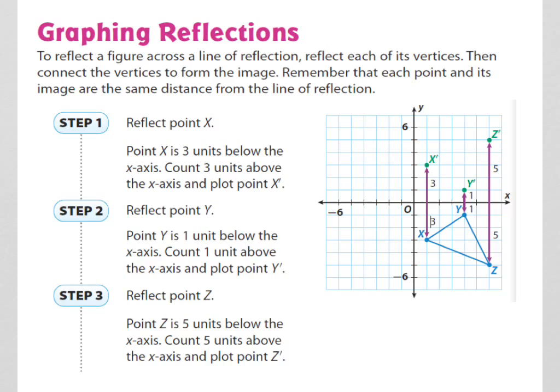Let's take a look at Y. Y is 1 unit below the x-axis, so you literally want to count 1 unit above it, and that's your y-prime. And let's look at Z. Z is 1, 2, 3, 4, 5 units below. So you want to start, look at your x-axis, that's your line of reflection, and from the x-axis go up 1, 2, 3, 4, 5, and you put your z-prime.